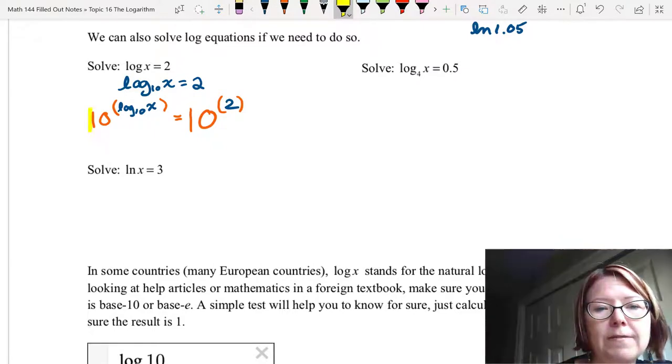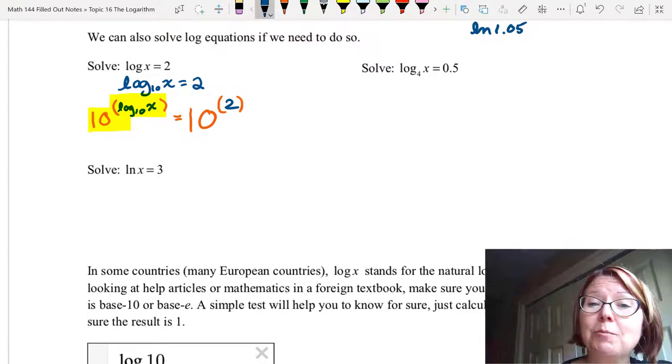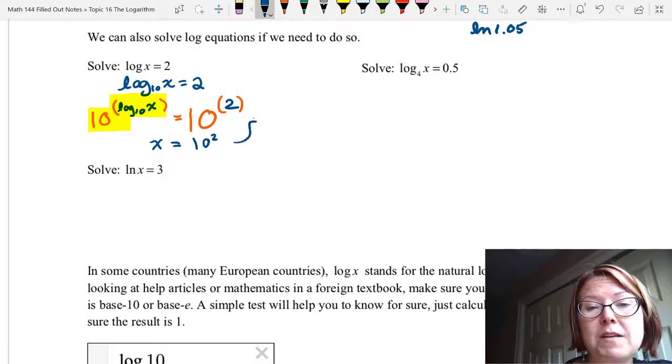Well, that whole part on the left, the 10 to the log base 10 of x, that's a function composed with its inverse, which will just be x. And then 10 squared is just going to come out to be 100. So x equals 100.